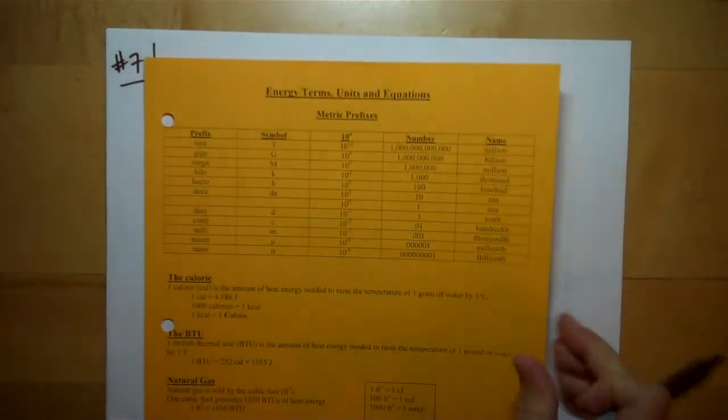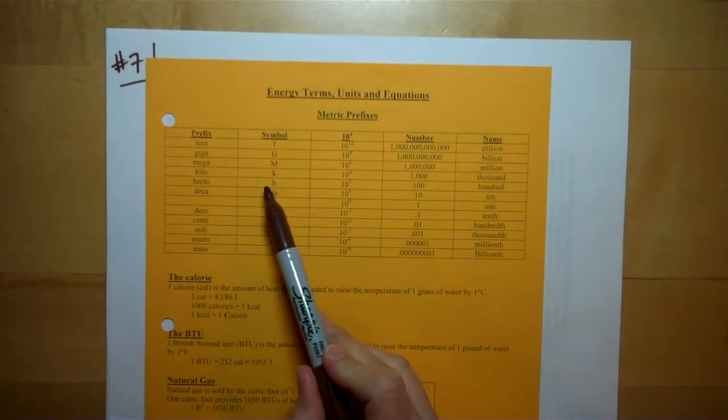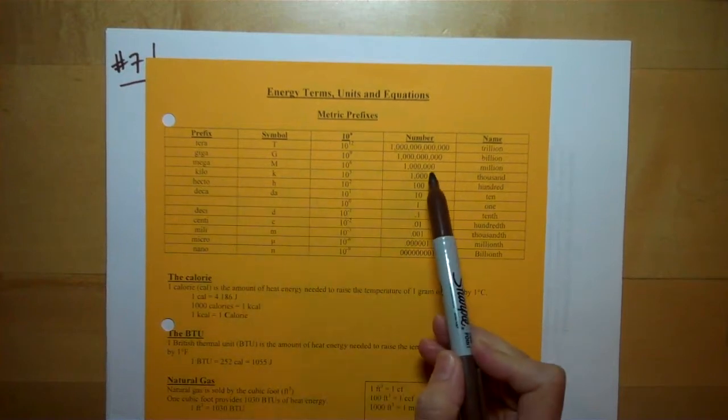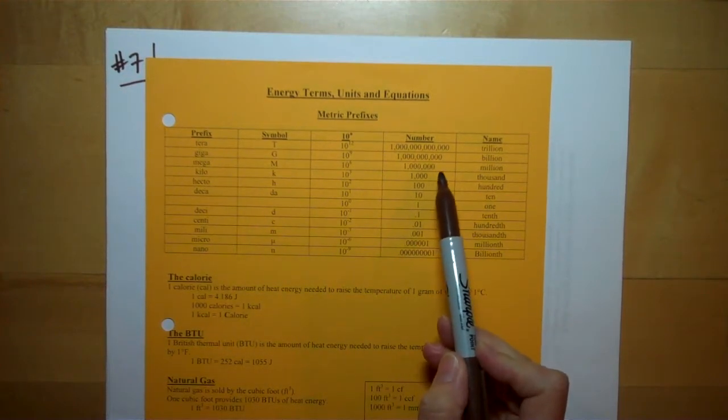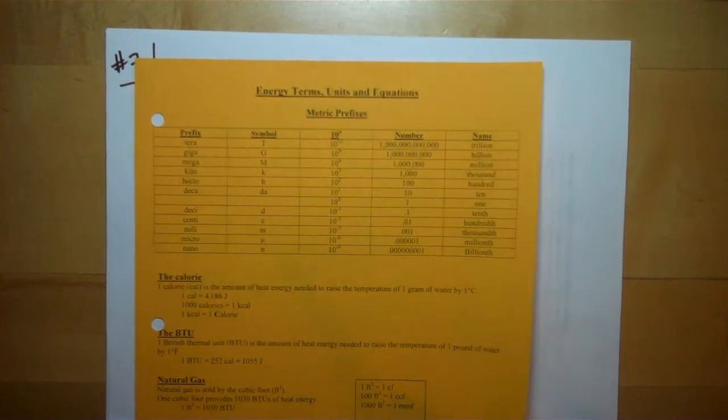If you recall from your prefixes, kilo means a thousand, mega means a million, so you're only off by ten to the three, you're only off by a thousand.